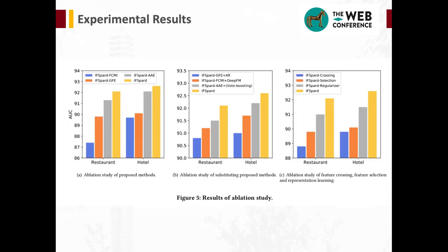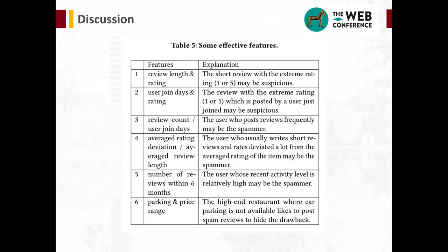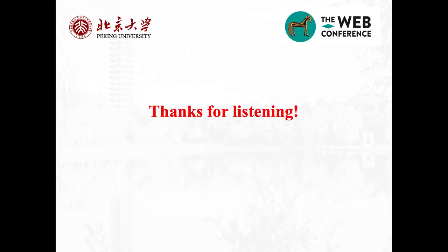To evaluate the effectiveness of the proposed modules in IFSPART, we conduct an ablation study whose AUC results are presented in Figure 5. Various features can be automatically constructed via graph-based feature extraction and interaction mining-based feature crossing. Table 5 shows some effective features generated and selected by IFSPART which may be ignored by previous work. As shown in the table, the features automatically constructed by IFSPART have the advantage of good interpretability. That's all, thanks for listening.